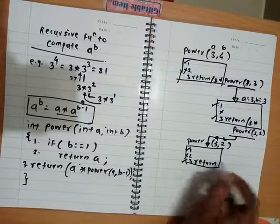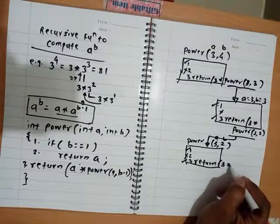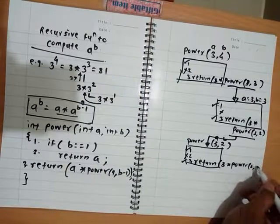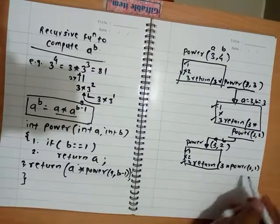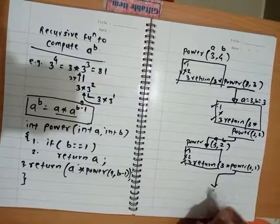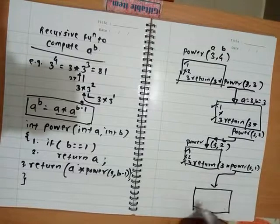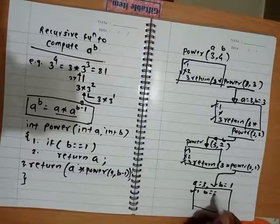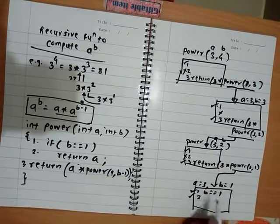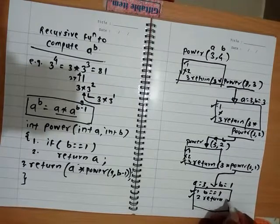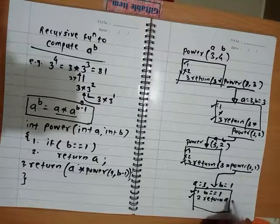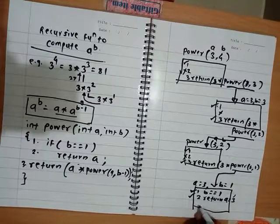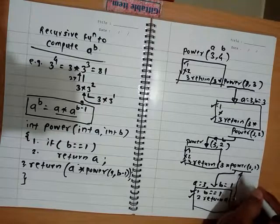It says return 3 into power(3, 2 minus 1), which is power(3, 1). So I go to the power function again. Now in the power function I have a=3 and b=1. I execute statement 1 and find b equals 1 this time, so I execute statement 2 and return a, which is 3. So from this call I return 3.